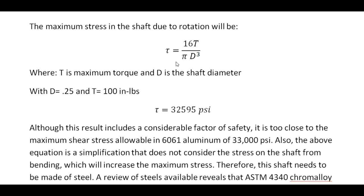The first thing we need to do is calculate the maximum torsional stress in the shaft due to the forces applied by rotation. We can do that by applying this equation, where tau — the Greek symbol tau — represents the torsional stress in the inner shaft in pounds per square inch. T is the maximum torque applied to the shaft and D is the shaft diameter. If D equals 0.25 and T equals 100 inch-pounds, tau will equal 3,295 pounds per square inch.